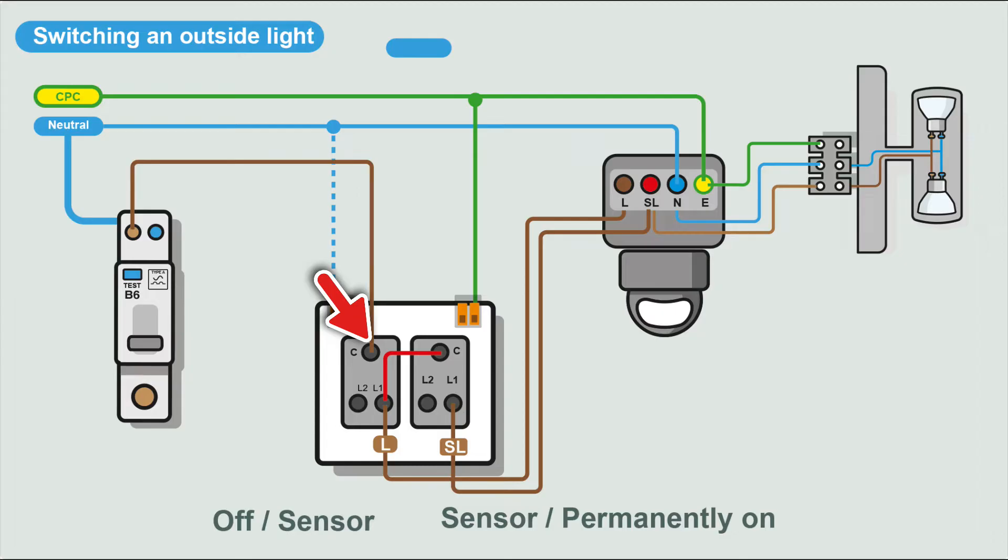So with this setup, we have the feed coming into common on the first switch. On L1, it leaves and goes to the permanent live in the PIR. And from that same L1, we take a feed to common in the second switch. And from L1 in the second switch, we take that to the switch live. So what happens here, we can actually switch the whole thing off now. With the first switch in the off position, everything is off. There's no power going to the PIR or the light. If you switch the switch on, L1 becomes energized, and that will take the permanent live on to the live in the PIR.